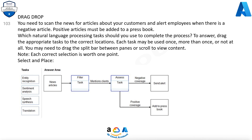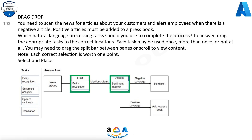Box 1: Entity recognition. The named entity recognition module in machine learning studio identifies the names of things, such as people, companies, or locations in a column of text. Named entity recognition is an important area of research in machine learning and NLP, because it can be used to answer real-world questions such as: Which companies were mentioned in a news article? Does a tweet contain the name of a person? Does the tweet also provide their current location? Were specified products mentioned in complaints or reviews?